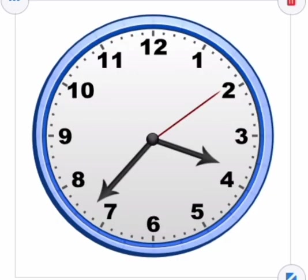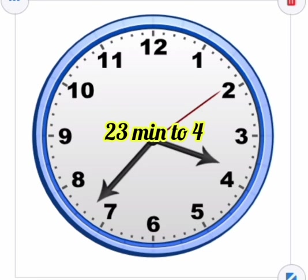Next clock time: three thirty-seven. The minutes are thirty-seven. The balance is 60 minus 37, which is 23 minutes remaining to four o'clock. So we say 23 minutes to four.